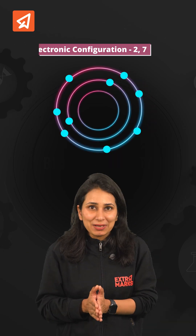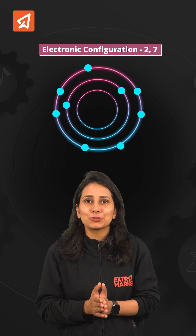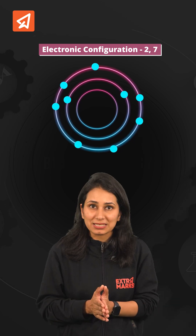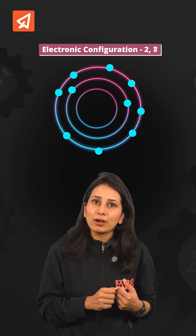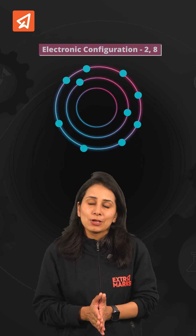In the last atom, nine protons are present and the electronic configuration is 2,7. It will gain one electron and an anion is formed.